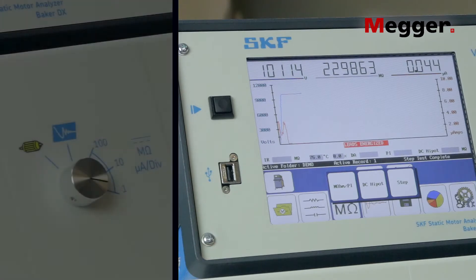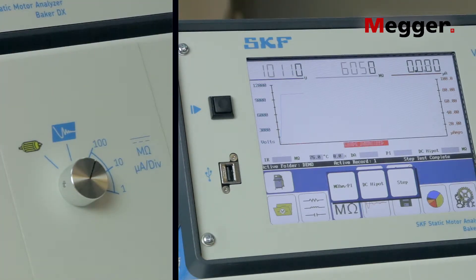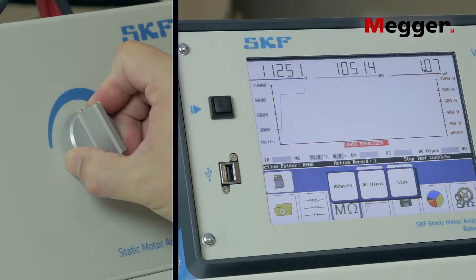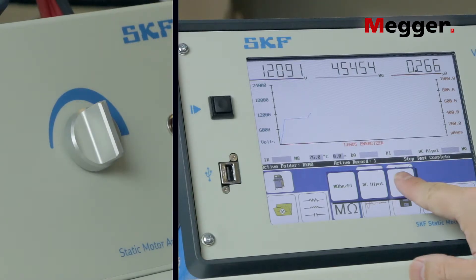When the step timer is complete, return the power pack's function knob to 100 microamps per division. This will avoid an overcurrent trip when you increase the voltage. Turn the voltage control knob smoothly to increase the voltage to the next desired level, and press step.